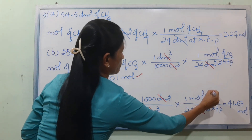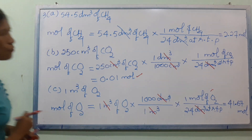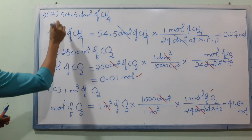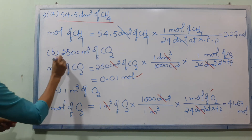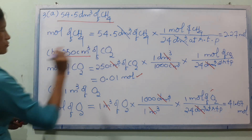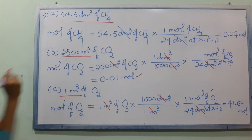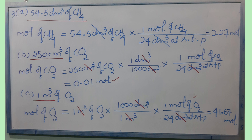So for number A we used dm³, number B used cm³, and number C used m³. This covers the book page 11 review questions. That's all for this exercise — see you next lesson, bye.